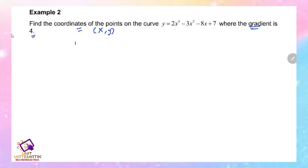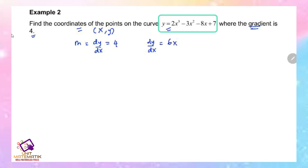The gradient is your m, or we can also get it from dy/dx. So m equals 4. We can also find dy/dx from the curve. From the curve, dy/dx is 6x² - 6x - 8.